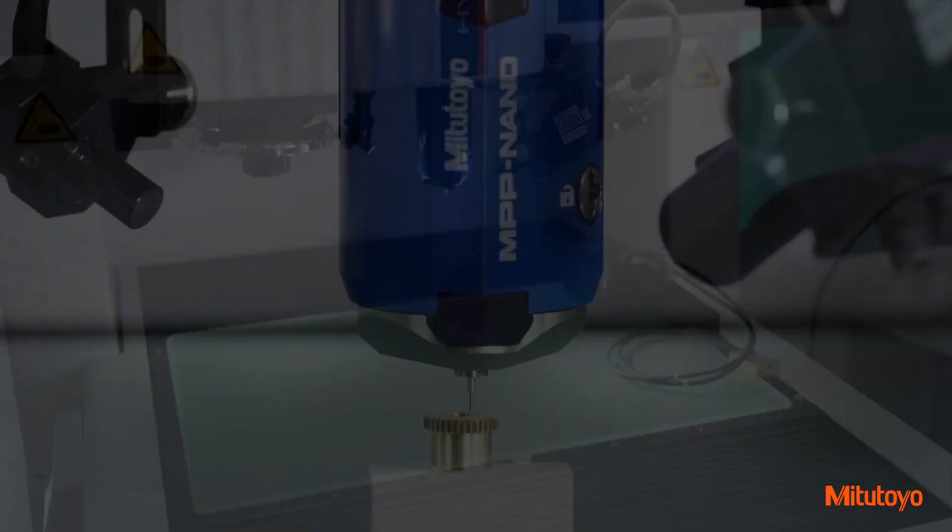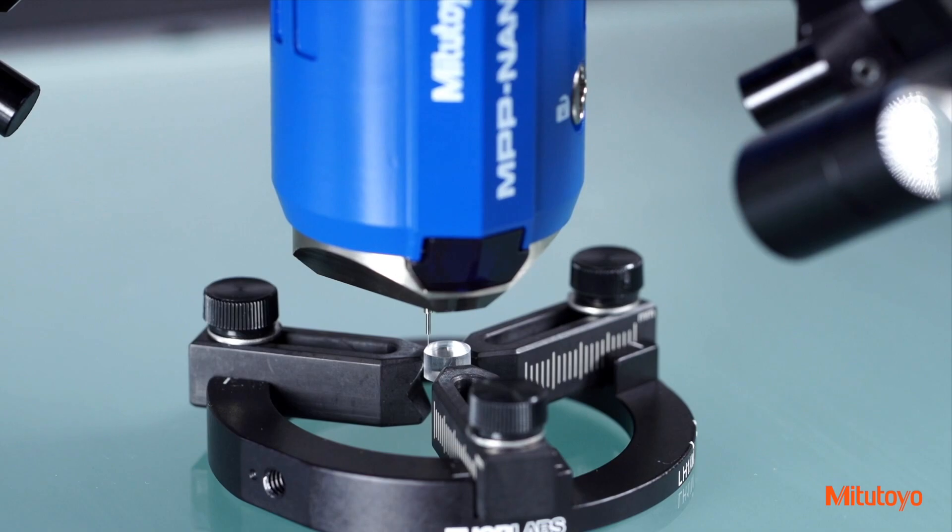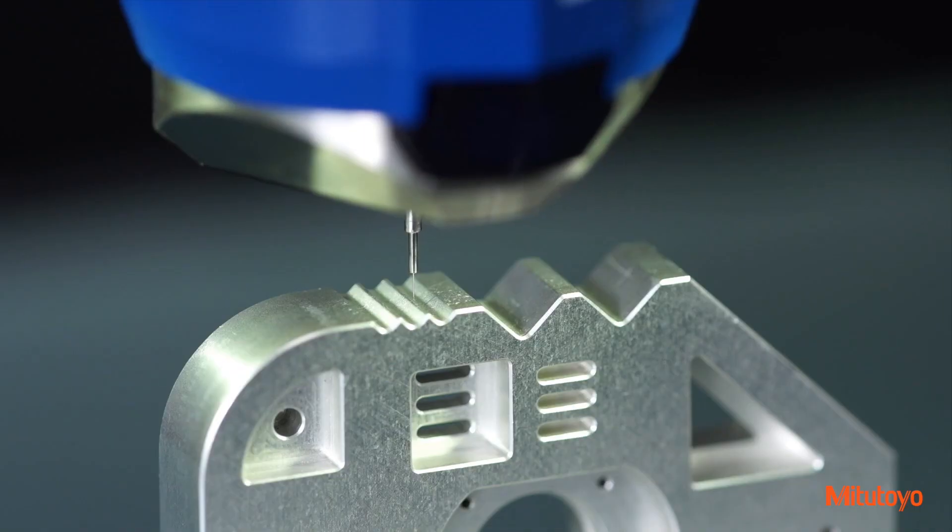MyScan's versatility is evident with its ability to measure microscopic gear teeth, lenses and optical tubes, precision molds, and precision mechanical parts.